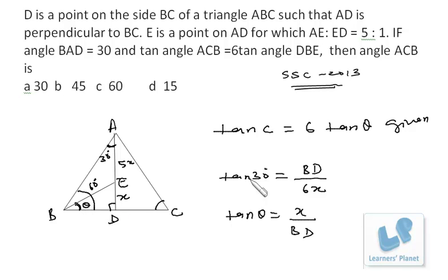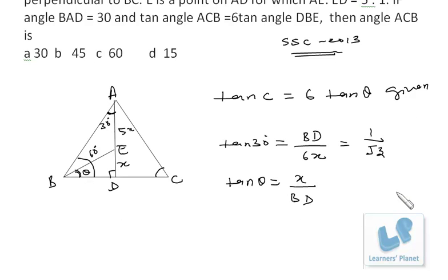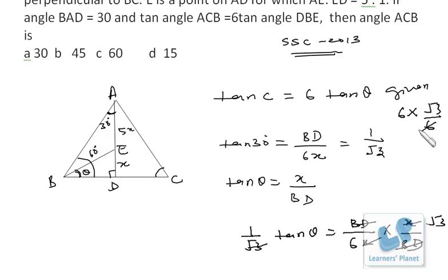So here tan theta is equal to perpendicular, that is X by base, that is BD. Perpendicular by base, this is angle theta. Now tan 30 degrees is 1 upon root 3. Now what I do, I multiply both of them. So tan 30 degrees into tan theta, that is 1 upon root 3 into tan theta is equal to BD by 6X into X by BD. So tan theta is nothing but root 3 by 6.